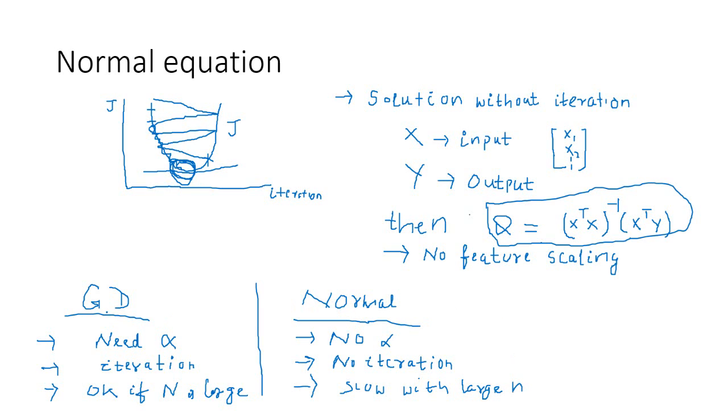The basic differences between gradient descent: in gradient descent, we need alpha, we need a converging parameter, and that needs to be suitable. Sometimes if you choose a very high alpha, then it might not converge. Whereas, normal equation, we do not need any alpha. Gradient descent requires iteration, but normal equation does not require any iteration. That is an advantage.